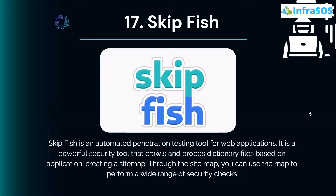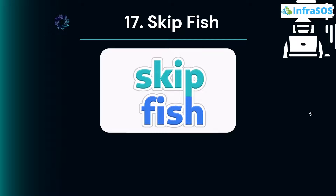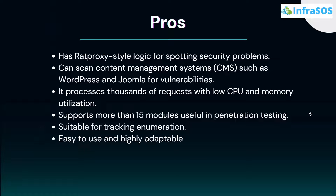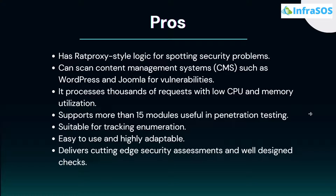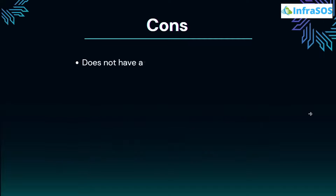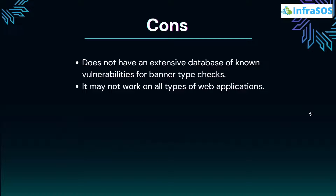At number 17 we have SkipFish. SkipFish is an automated penetration testing tool for web applications. It is a powerful security tool that crawls and probes dictionary files based on applications, creating a sitemap which you can use to perform a wide range of security checks. Major pros include RAD proxy-style logic for spotting security problems, scanning CMS platforms such as WordPress and Joomla for vulnerabilities, processing thousands of requests with low CPU and memory utilization, and supporting more than 15 modules useful in penetration testing. Cons include lacking an extensive database of known vulnerabilities for banner-type checks and may not work on all types of web applications.